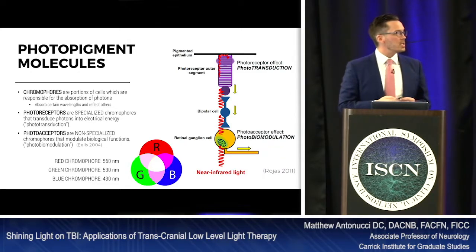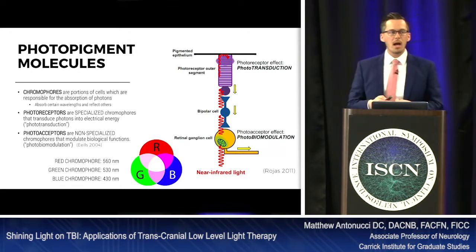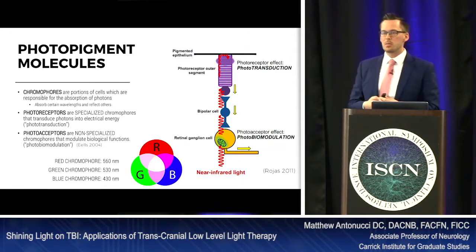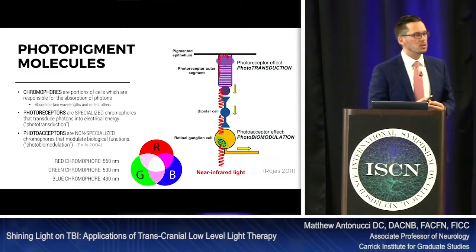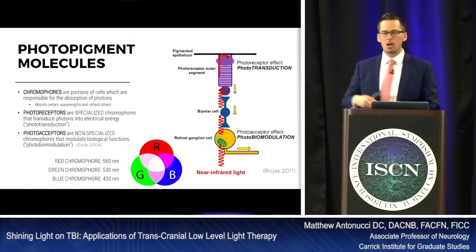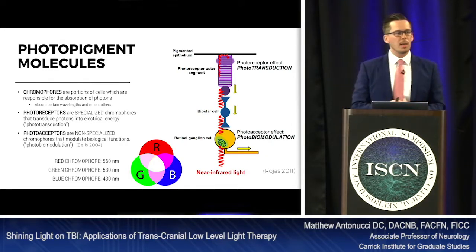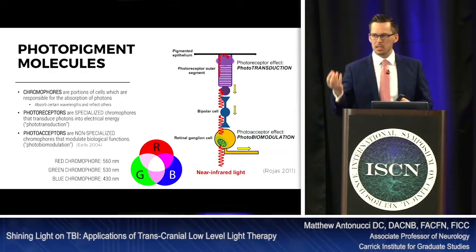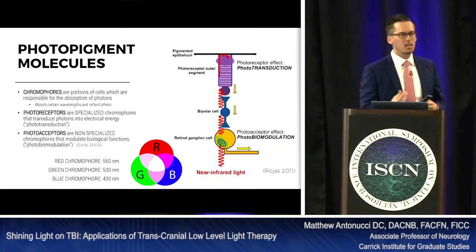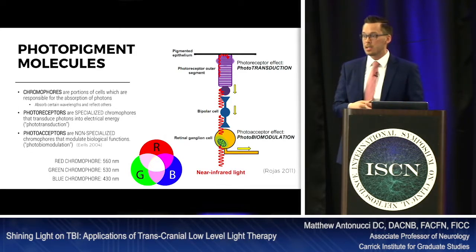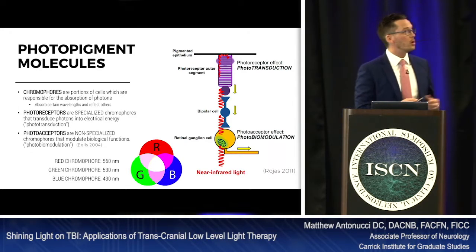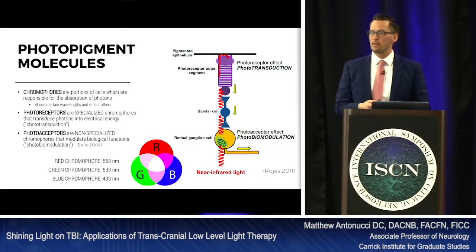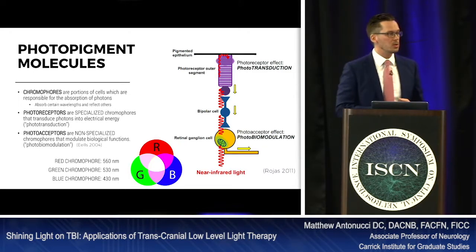On the right side of the screen, we can see different cells in our eyes. Some are photoacceptors, which don't have any participation in sensing, and we have photoreceptors. Photoreceptors are involved in phototransduction — receptors have one job: they are transducers, converting some form of physical energy into electrical energy so we can experience the world. Phototransduction occurs in the receptors, and photobiomodulation occurs in the photoacceptors.